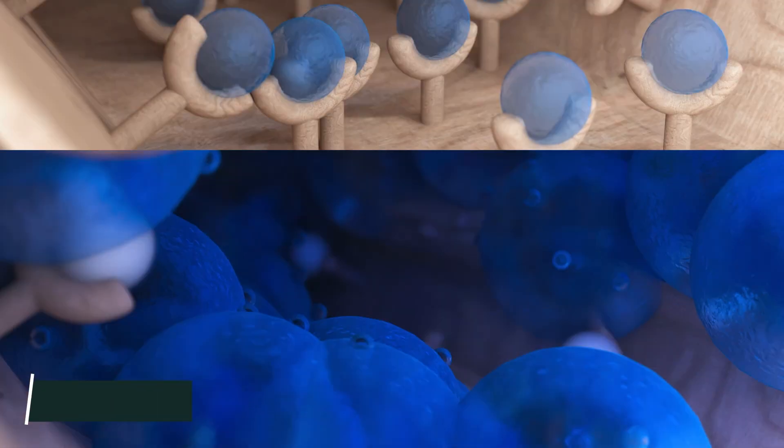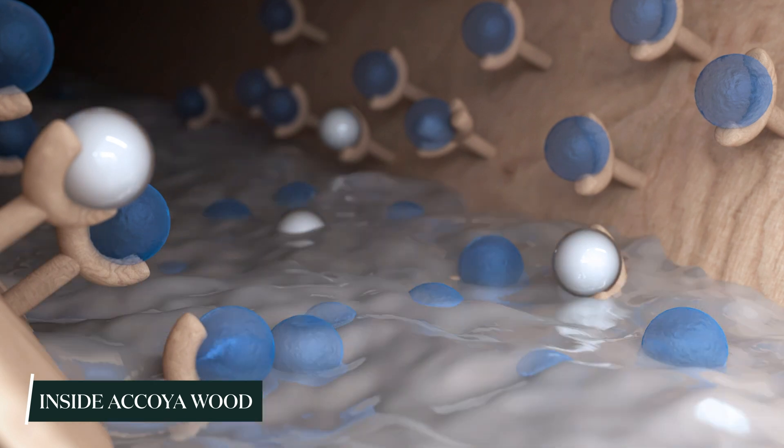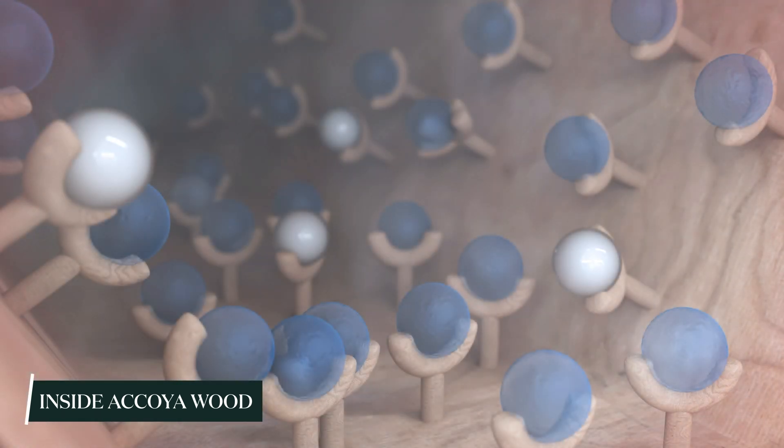That's where Akoya wood stands apart. Using acetic anhydride in a precise acetylation process, applying just the right amount of heat and pressure, we transform wood at a cellular level.